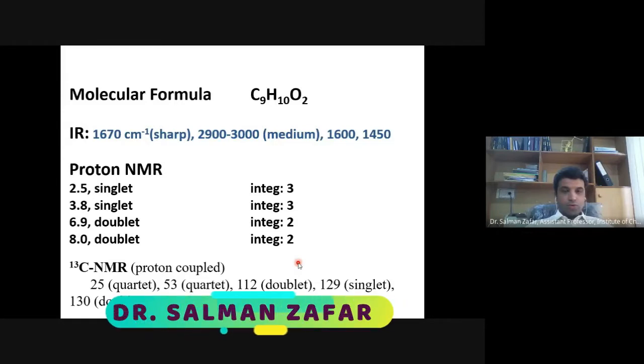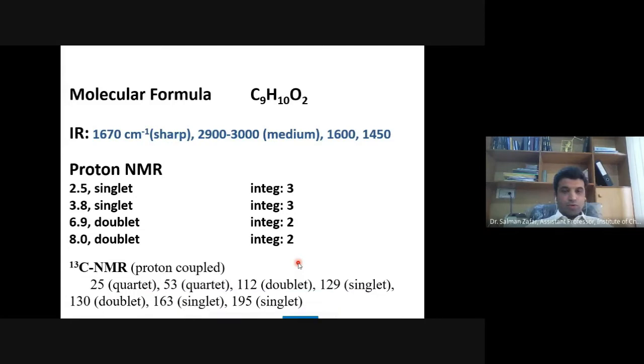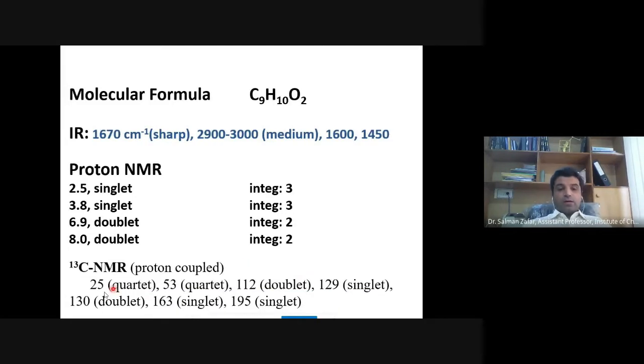Determine the structure of the following compound. Molecular formula is C9H10O2. IR values are 1670 per centimeter, 2900 to 3000, a medium peak at 2900 to 3000 per centimeter, and a couple of peaks at 1600 and 1450 per centimeter. Proton NMR shows four signals: a singlet at 2.5, a singlet at 3.8 for three protons each, and then we have two doublets at 6.9 and 8 for two protons each.